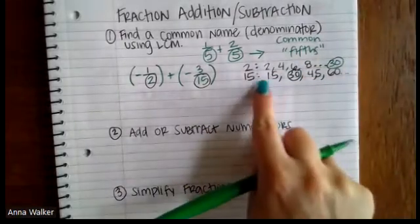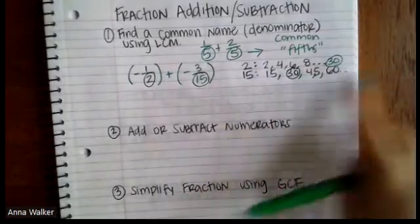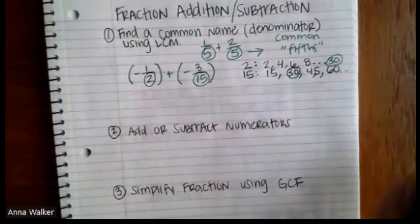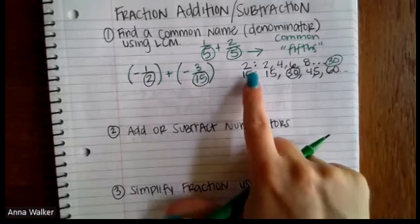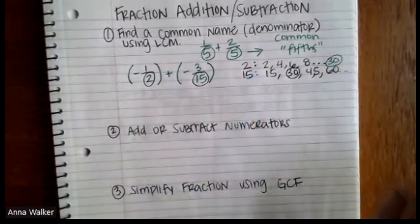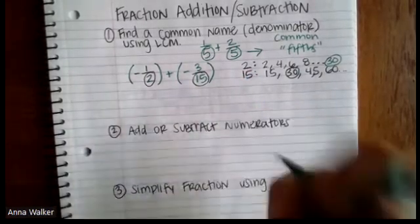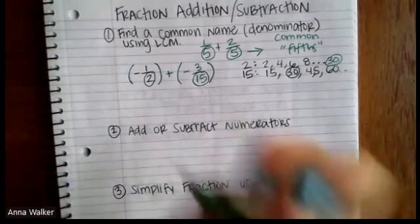Two can go up to 30. If we kept counting, it would have gone off our page if we kept the list going, but 30 is the least common denominator between one half and three fifteens, or it's the least common multiple between two and 15.